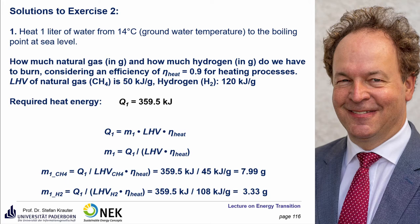Putting in the numbers: M1 equals Q1 divided by the lower heating value times eta of heat. So we have 359.5 kilojoule divided by 45 kilojoule per gram, which is 7.99 grams of natural gas. For hydrogen, which has a much higher lower heating value, we only require 3.33 grams to perform the same task.